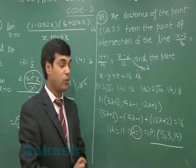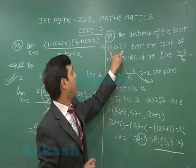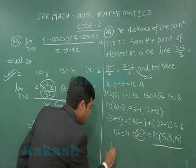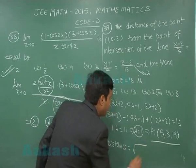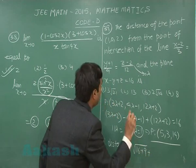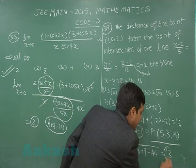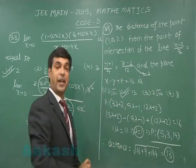Now the question is simply about finding distance of this point P (5, 3, 14) from the point (1, 0, 2). Apply distance formula. Therefore, distance equals root of 16 plus 9 plus 144, that is 13. So from the given options, option number 2 is correct.